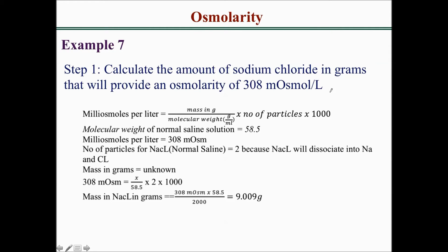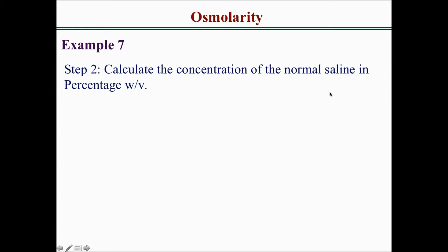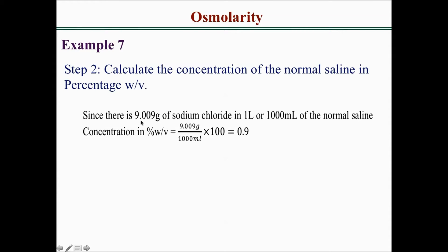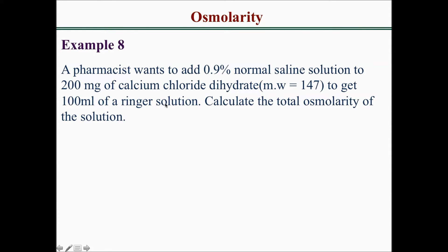However, the question asks us to calculate the concentration of normal saline in percent weight by volume. Since there are 9.009 grams of sodium chloride in 1 liter (1000 mL) of normal saline, the concentration in percent w/v equals 9.009 grams divided by 1000 mL, multiplied by 100, which gives 0.9% weight by volume of normal saline solution.